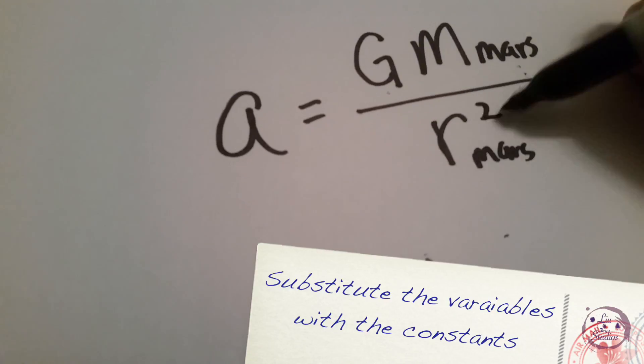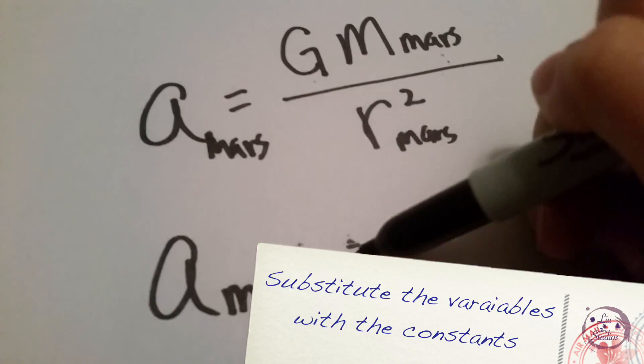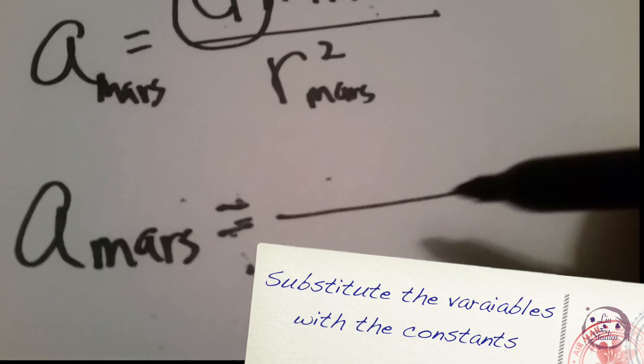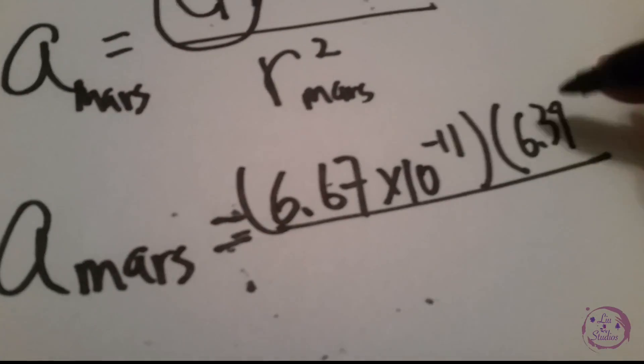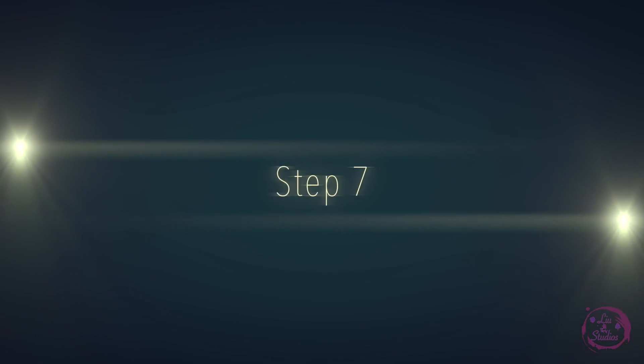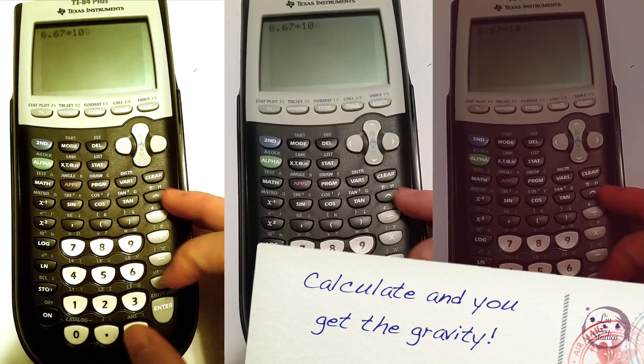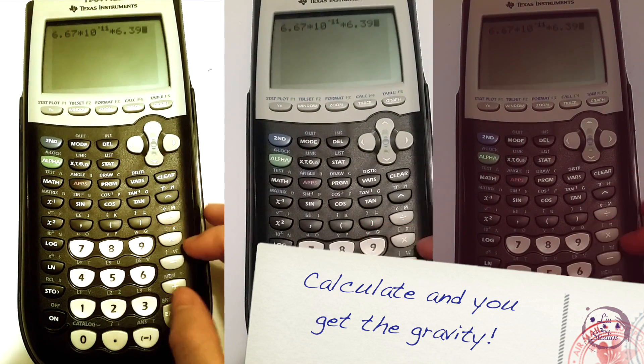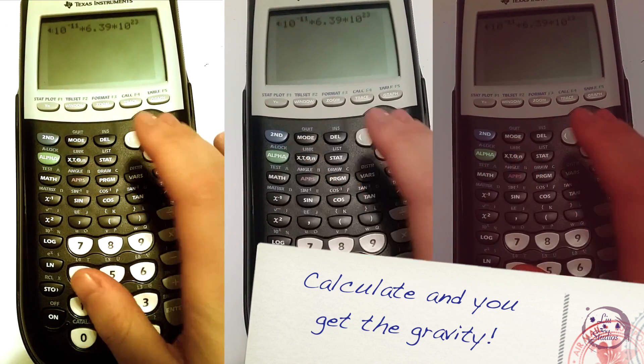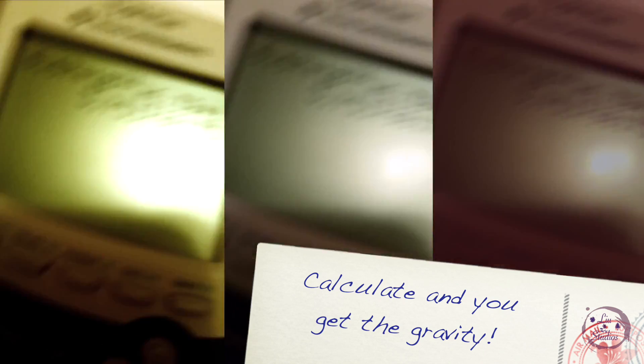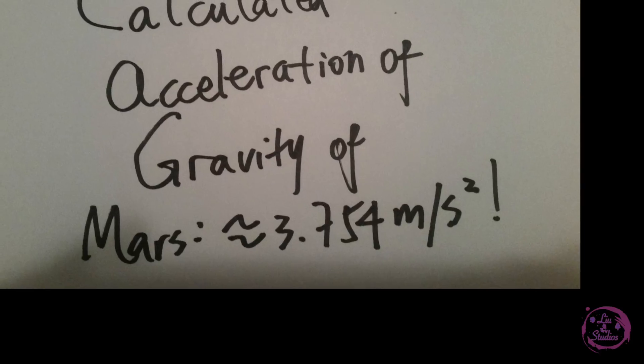After that, put the mass M1 and radius of the planet into the formula a = G(M1)/r². Use your calculator to calculate the acceleration of gravity on the planet, and now you get the answer. This acceleration I calculated is the acceleration of gravity on Mars.